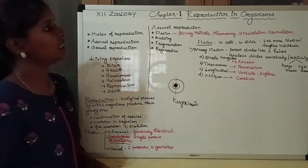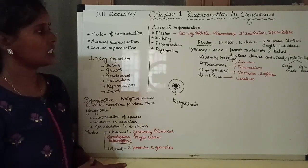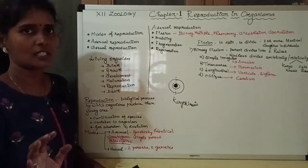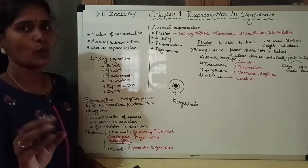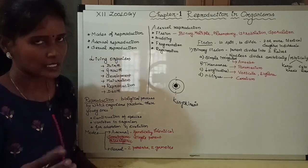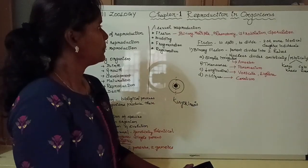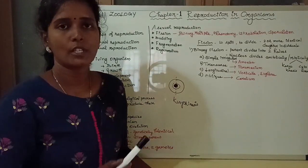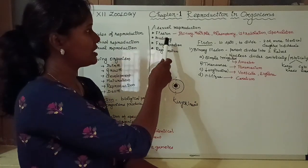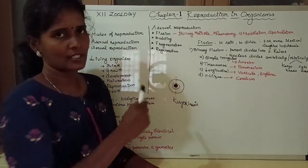Coming to asexual reproduction and its types — asexual reproduction has a variety of types. It usually occurs in lower organisms, specifically unicellular organisms. There are four basic types of asexual reproduction we will discuss in this chapter: namely fission, budding, fragmentation, and regeneration.